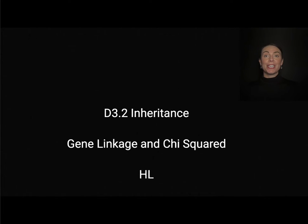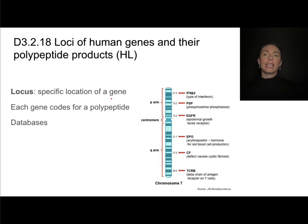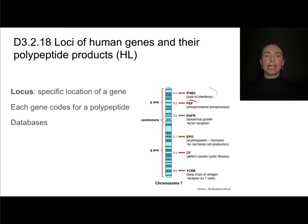In this video, we'll be diving into gene linkage and the chi-square test — higher level content from D3.2 on inheritance. One of the words you'll be hearing quite a bit is the word locus. Locus is singular, loci is plural, and locus just means a specific location of a gene on a chromosome. Each gene codes for a polypeptide. Looking at chromosome number seven for humans, there are several well-known genes whose exact locations are known. I highly recommend using databases to find these — it makes for some great data analysis.